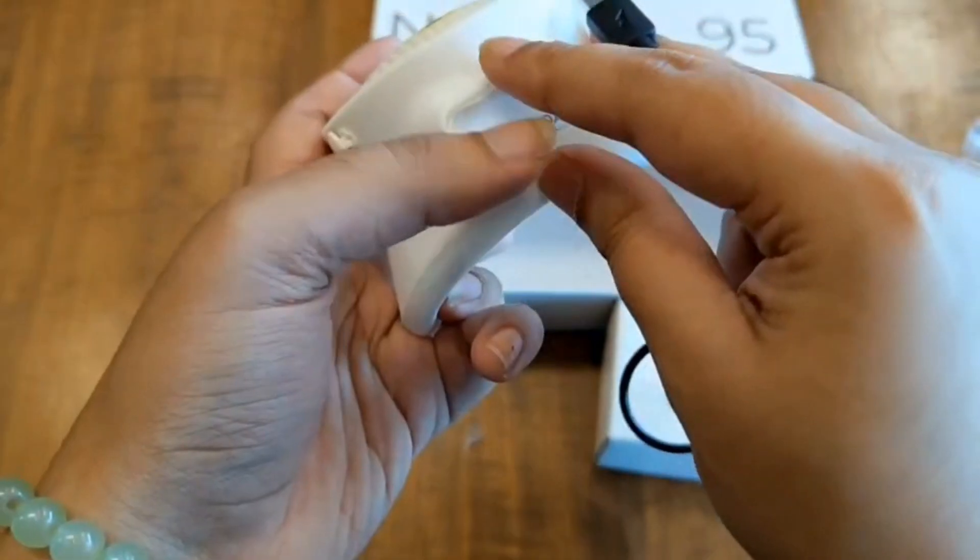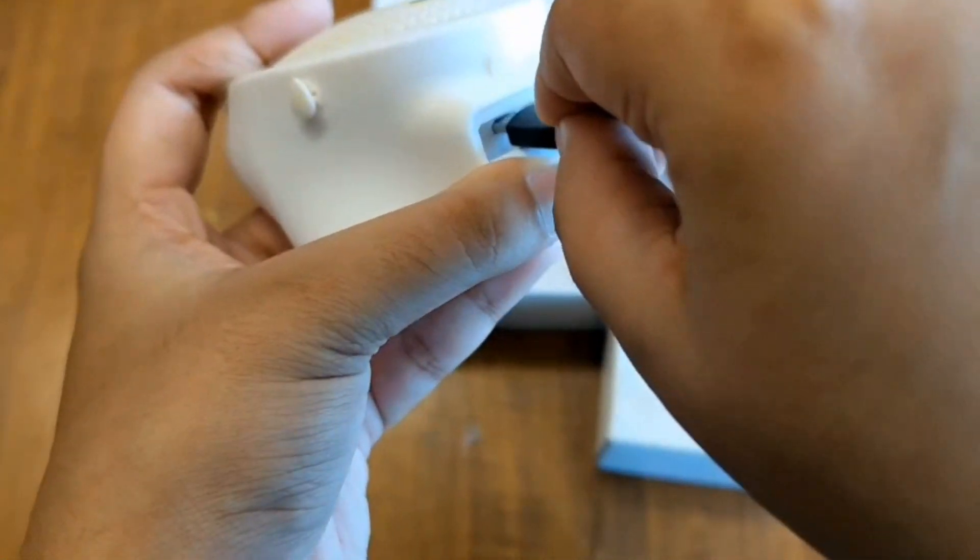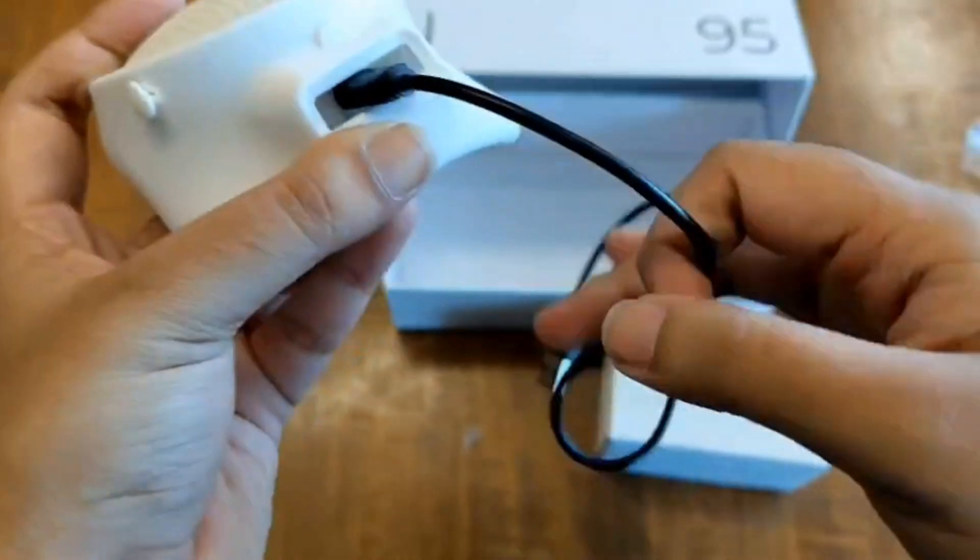Now look at the bottom side of the mask. You'll find a small charging port there. Insert the smaller end of the USB cable into that port.